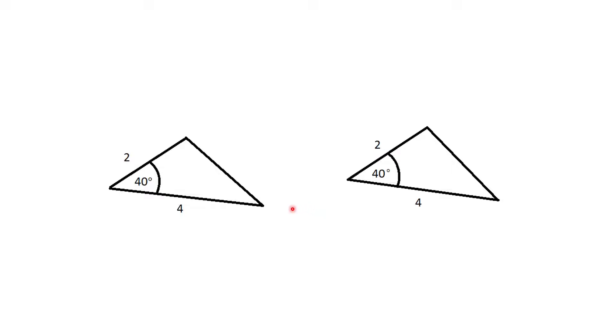These are definitely congruent because of SAS, so we have a matching two, matching four, and the angle in between the two and the four is also the same between those two triangles. So that angle must be in between the two pairs of matching sides.